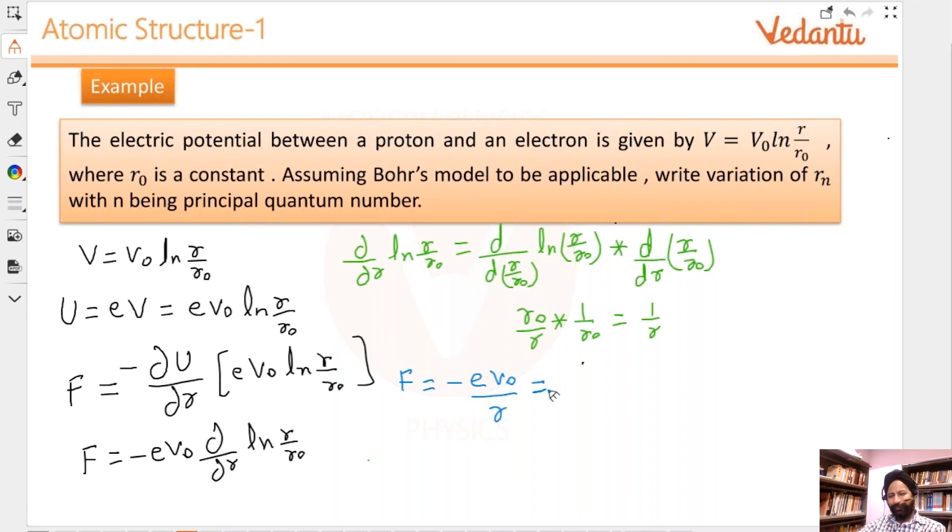This is supposed to equal mv²/r. So now I have this, but we have to find the variation of rₙ with respect to n. We don't have to cross out r, we need to bring back r but cross out v somehow.